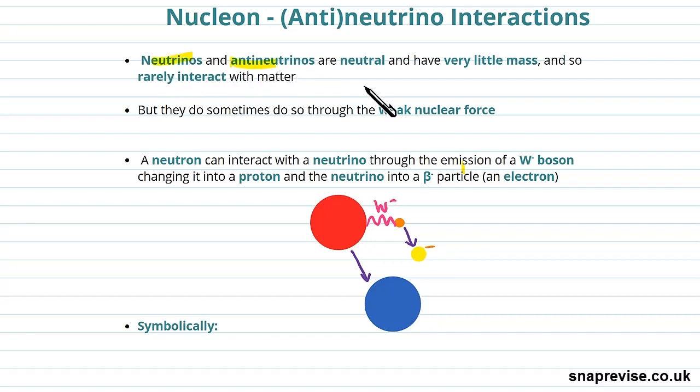Neutrinos and anti-neutrinos are neutral and have very little mass, and so they rarely interact with matter. In fact, they barely interact at all. There are billions upon billions of neutrinos emitted from the Sun every second, but they barely interact with the Earth at all because they are neutral and they have very little mass.